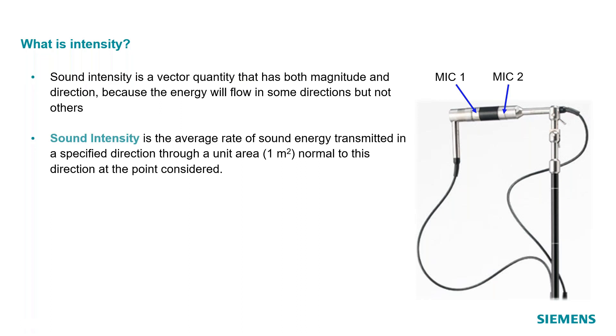And we call sound intensity the average rate of sound energy transmitted along a certain direction. So let me change my pointer to a laser pointer here. And so this probe, because it has two microphones, it can only measure sound intensity along the axis of the microphones or along the axis of the probe. If the sound's flowing this way, we're not going to be able to measure it because the microphones are out sort of out of that vector orientation. So we measure sound intensity in a particular direction. It's going to be really important when we start to use these things. We have to keep that in mind.